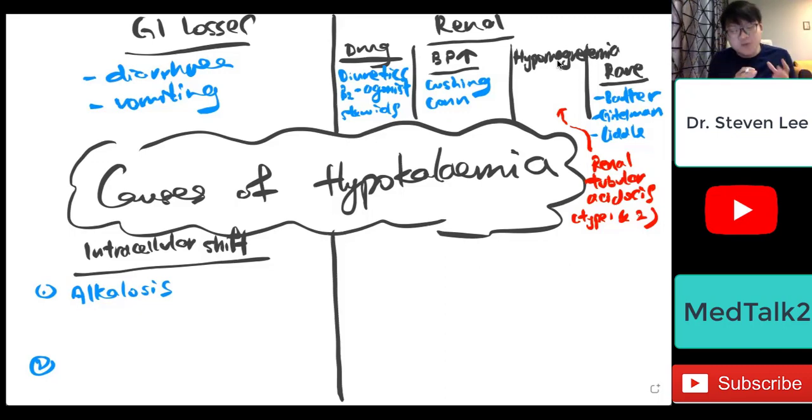So that's why alkalosis is one of the causes of hypokalemia. Whatever things that can cause the alkalosis. Number two, you can also think about insulin. Insulin also drives the entrance of potassium into the cells, thus reducing the serum potassium. So that's why insulin is one of the components in Lighted cocktail that we use to treat hyperkalemia.